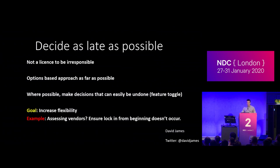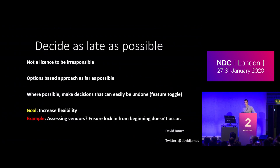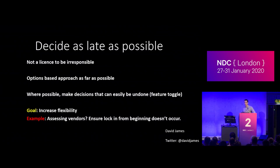Decide as late as possible — probably my favourite principle, if you can have a favourite. It's not a licence to be irresponsible, but it gives you the flexibility to change your mind as easily as possible. In software, we sometimes make decisions up front because we feel we need a clear way forward. Some decisions have to be made — the database vendor, for example. However, it's really important to delay as many decisions as reasonably possible to give you the biggest flexibility to change. The Toyota manufacturing comparison was: if they bent the metal too early and later found something needed to change, they'd have to throw the whole thing away — which goes back to eliminating waste.